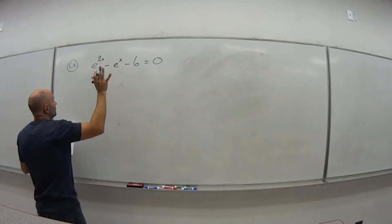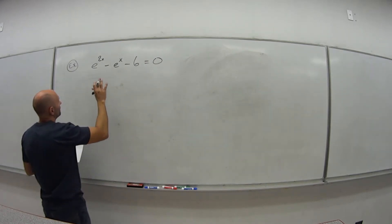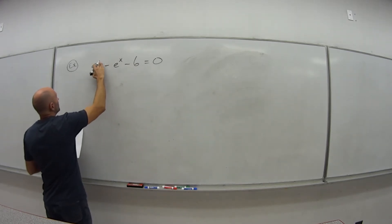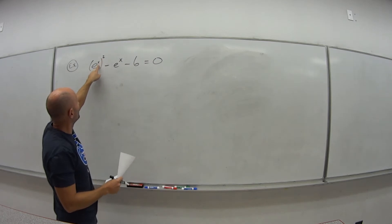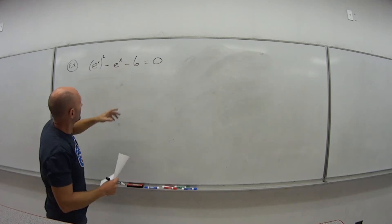This one might look a little bit difficult to do because we have our exponential, the e. So I'm going to write this a little bit different. e to the 2x is the same as e to the x squared, right? Because with our exponential rules, those multiply each other. So now what do we have? e to the x squared minus e to the x minus 6.